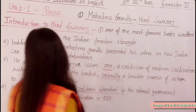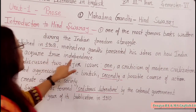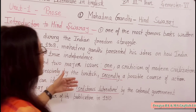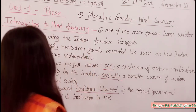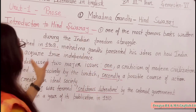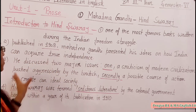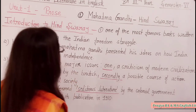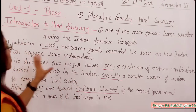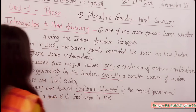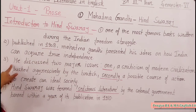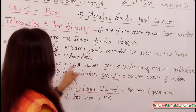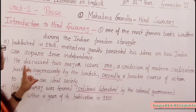It was published in 1909. In this book, Mahatma Gandhi presented his ideas on how India can acquire true independence — what true independence means and how India can achieve it. Next point: he discussed two major issues in this book.